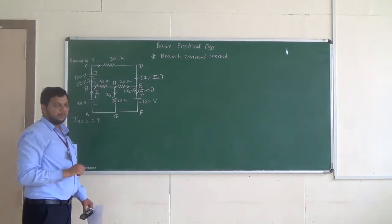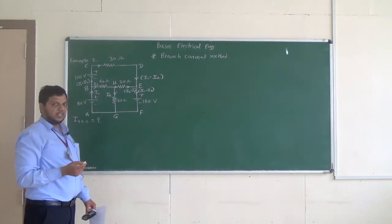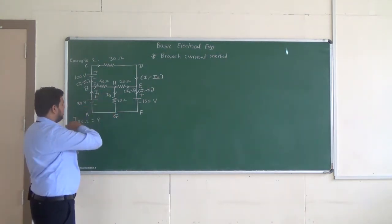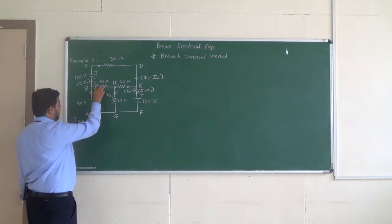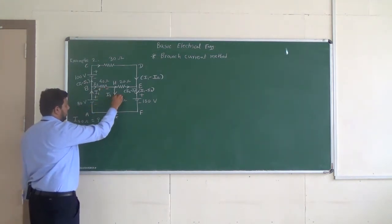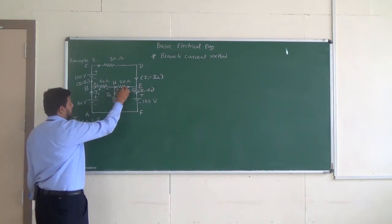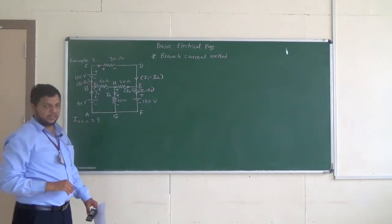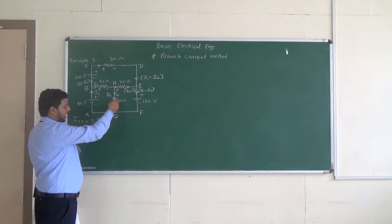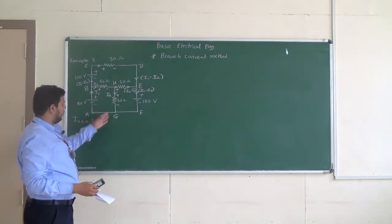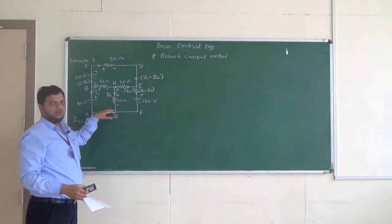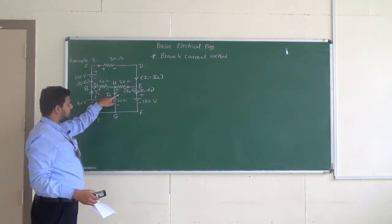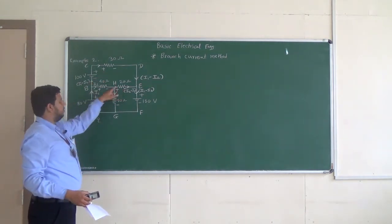In step number 4 we have to represent the polarity of voltage drops. The rule is: when current enters the resistance it is plus, when it leaves it is minus. We write plus here because current always flows from higher potential to lower potential, and higher potential is represented by plus.